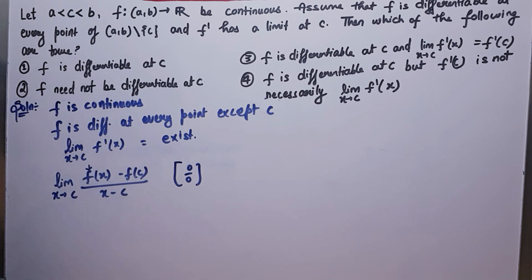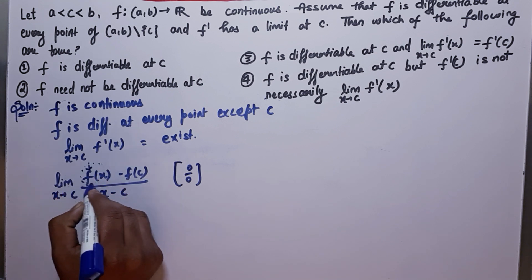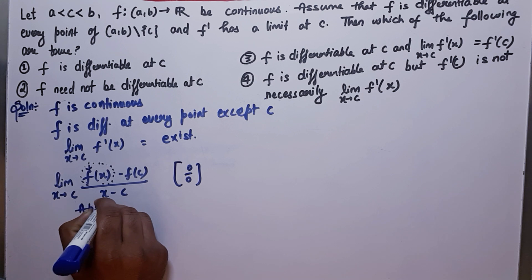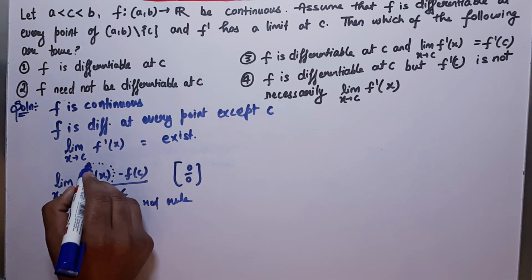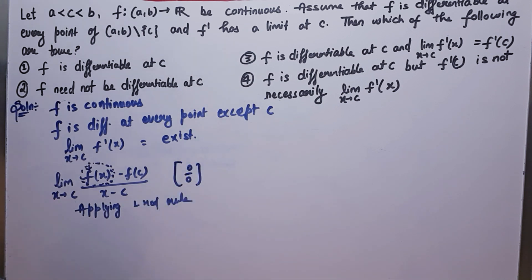This is a 0 over 0 form, and F is differentiable since the limit is tending towards C — meaning x is not equal to C. Therefore, the function in the limit expression is differentiable because x is not C. F is continuous and x minus C is always differentiable. So you can apply L'Hôpital's rule. Why? Because this function is differentiable everywhere except C, and x is not equal to C here.